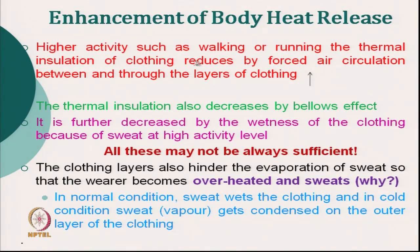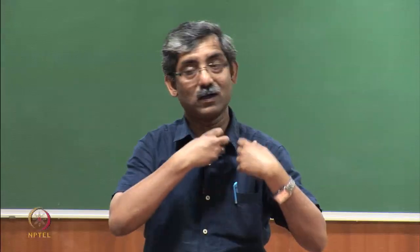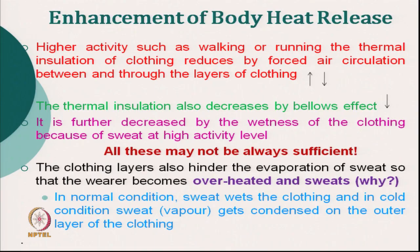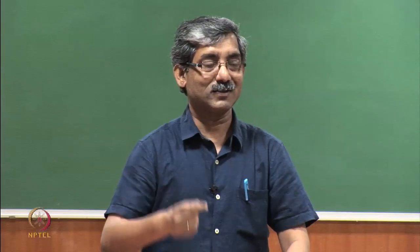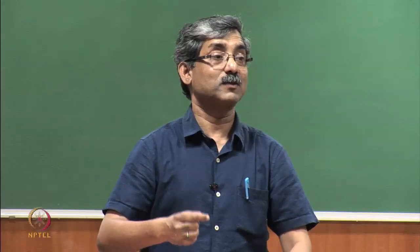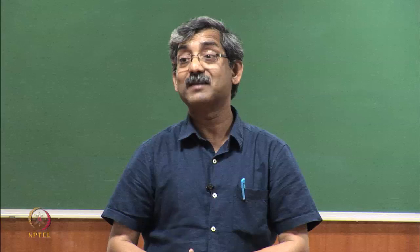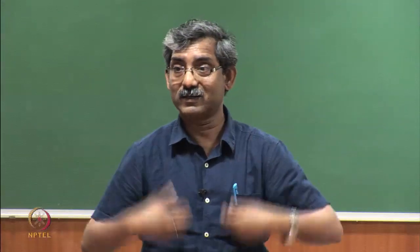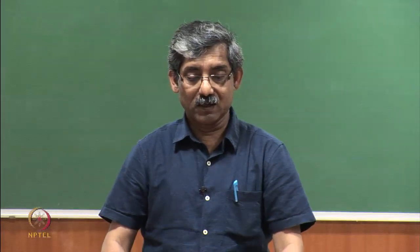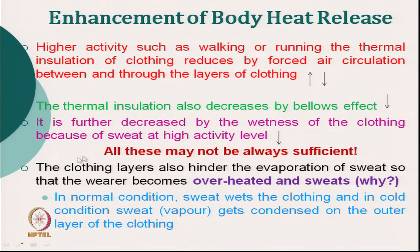To enhance body heat release: at higher activity such as walking and running, the thermal insulation of clothing reduces by forced air circulation. Body activity increases heat generation but reduces it through forced circulation. Thermal insulation also decreases by the bellows effect — it pumps fresh air in and hot air out from different openings. Thermal insulation is further decreased by wetness of the clothing: when cloth gets wet, its thermal transmission is very high and its thermal resistance becomes low, so it releases heat at a very high rate.